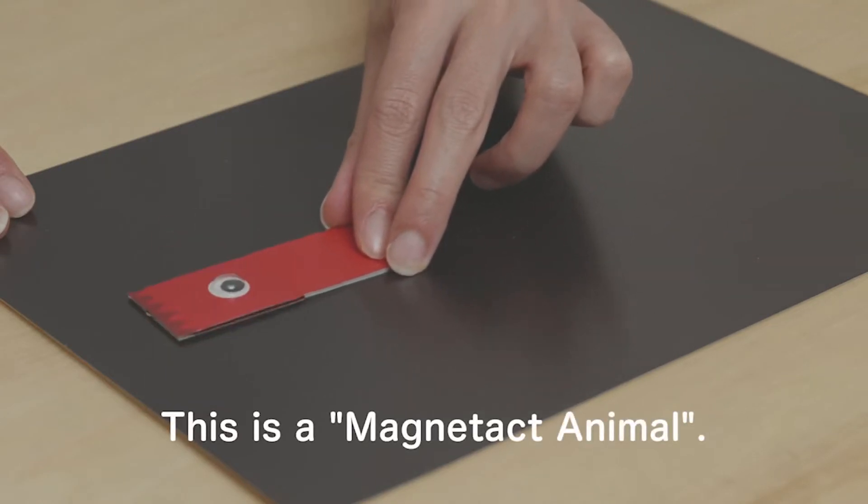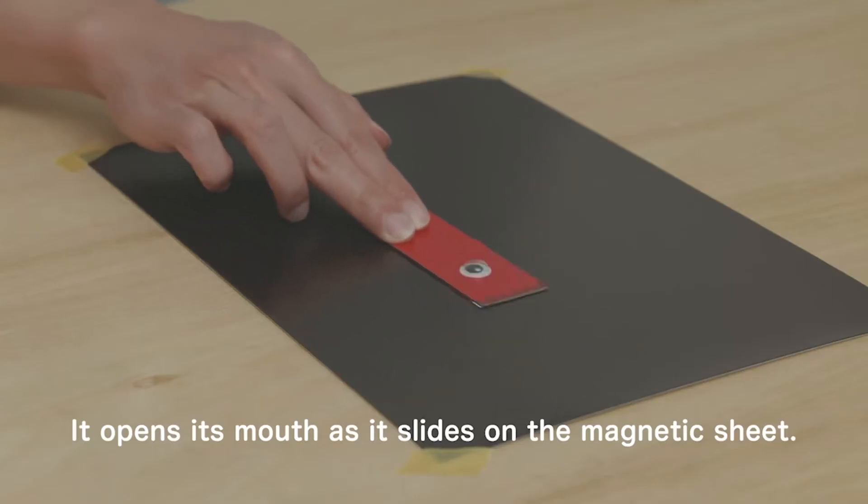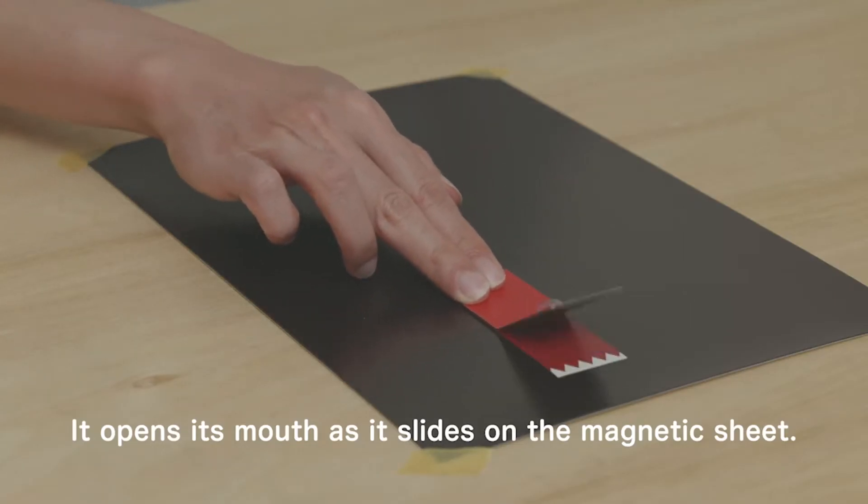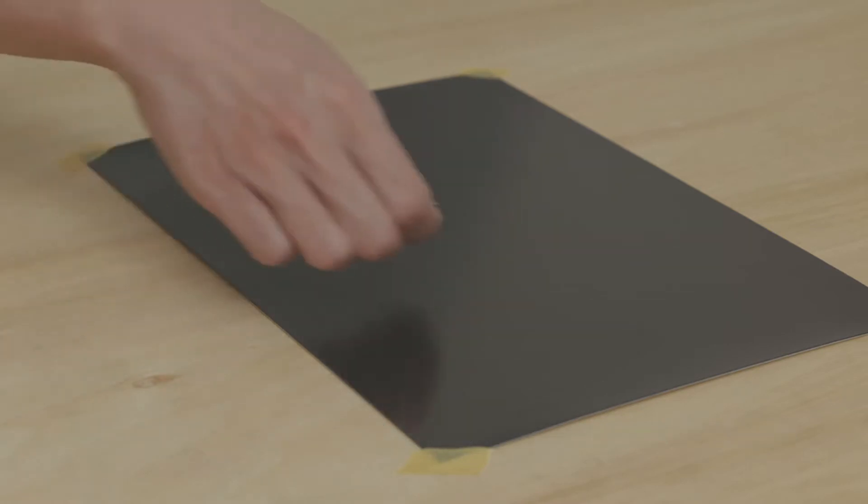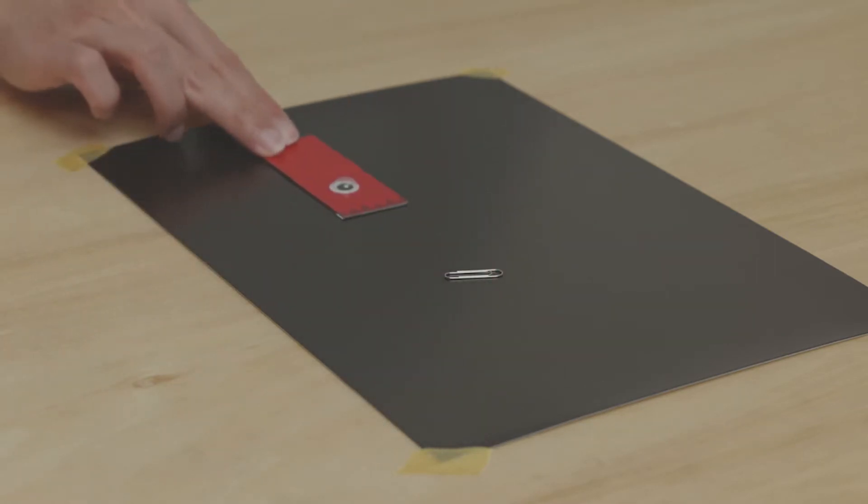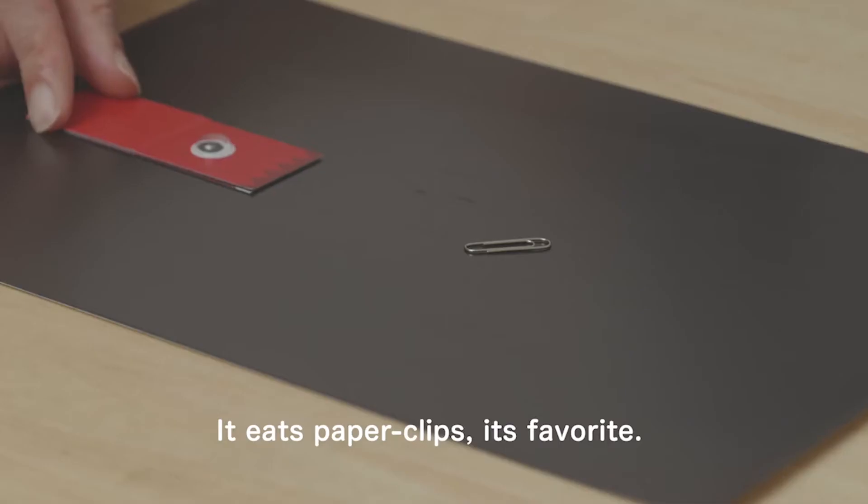This is a Magnetak animal. It opens its mouth as it slides on the magnetic sheet. It eats paper clips, its favorite.